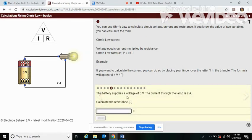The battery supplies a voltage of 8 volts. The current through the lamp is 2 amps. It's volts over current, so 8 divided by 2 is 4.